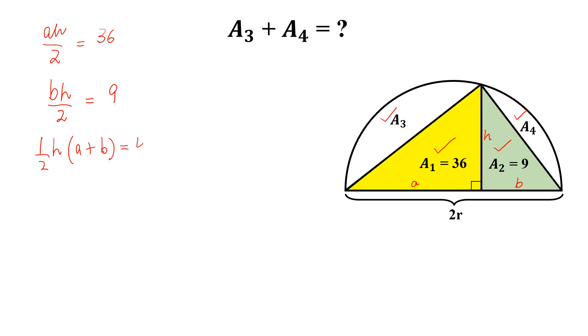By adding these two we get half of h into a plus b equal to 45. And a plus b is equal to 2r, so h divided by 2 into 2r equal to 45. And from here we get hr equal to 45. Then this is equation 1.